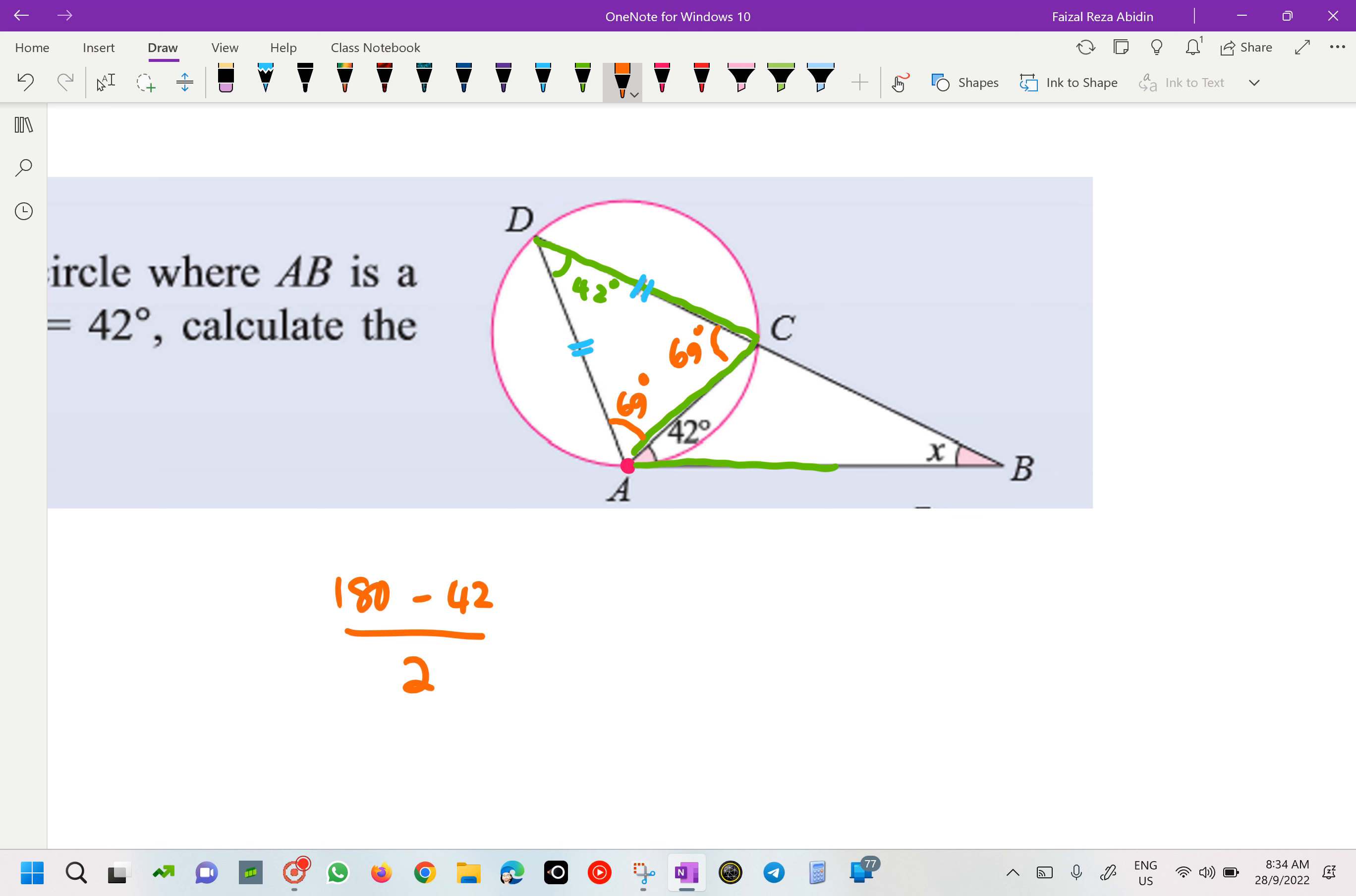So if this one is 69, can I have the angle at C? Because that one DCB is going to be straight line, so 180 minus 69 is 111. Next, can I find my x here? Yes, by using our triangle DCAB. So for our triangle BCA over here, you are going to get your x is 180 minus 111 minus 42. What do you get? 27 degrees.